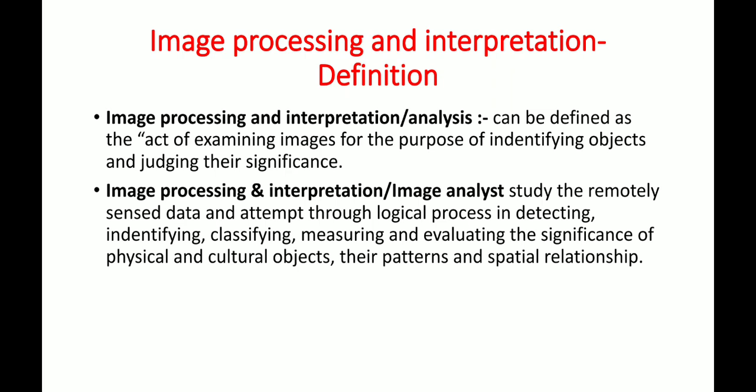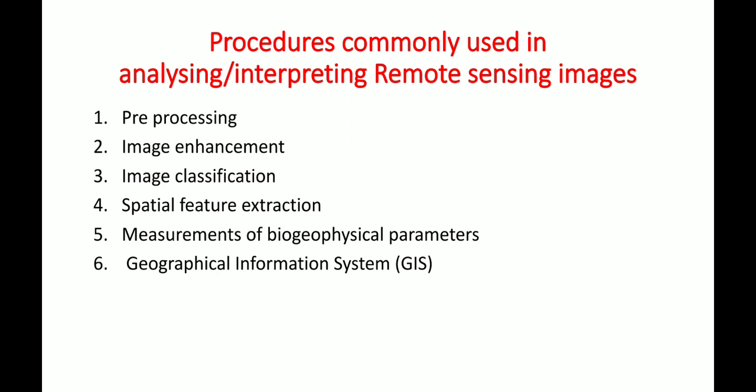The procedures commonly used in image processing involve data or images captured by remote sensing technology, which are processed for detecting, identifying, classifying, measuring, and evaluating different types of images and their significance. There are six procedures: first, pre-processing; second, image enhancement; third, image classification; fourth, spatial feature extraction; fifth, measurement of bio-geophysical parameters; and sixth, GIS — Geographic Information System.